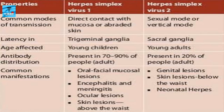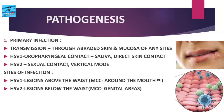Pathogenesis is discussed under three headings: primary infection, latent infection, and recurrent infection. In primary infection, transmission usually occurs through abraded skin and mucosa. For HSV1, the common mode of transmission is pharyngeal contact — that is, transmission through saliva and direct contact with the infected person. For HSV2, sexual contact or the vertical mode are the usual modes of transmission.